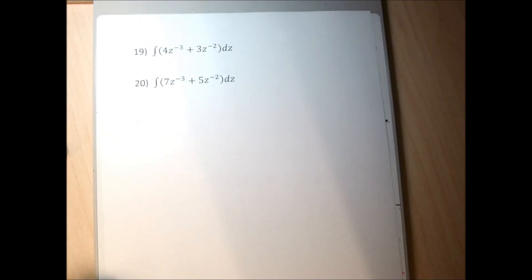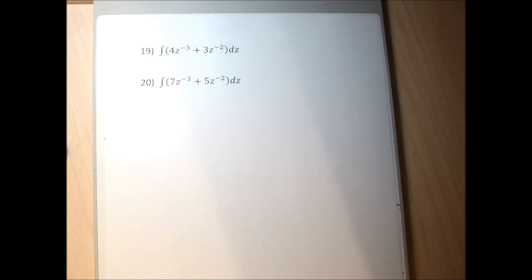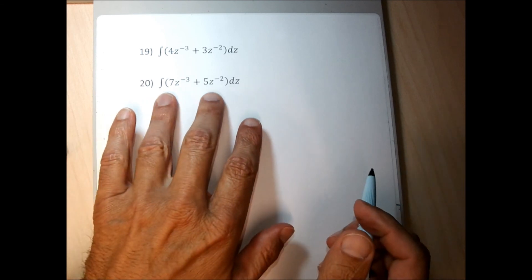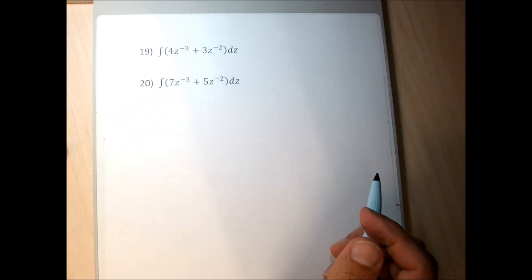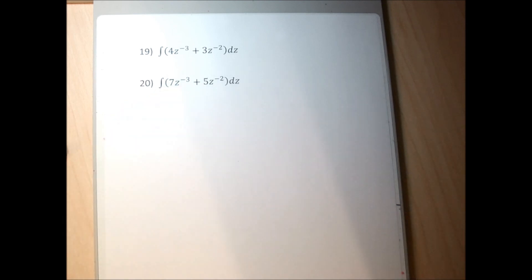Problem 20 picks up a new letter — not a big deal. I'm going to integrate term by term. For the first term, add 1 to negative 3: negative 3 plus 1 is negative 2, divide by negative 2. For the second term, add 1 to negative 2: negative 2 plus 1 is negative 1, divide by negative 1. Drop those symbols and tack on plus C.